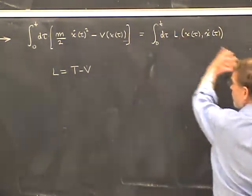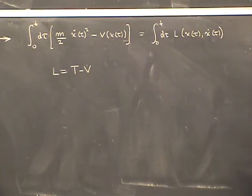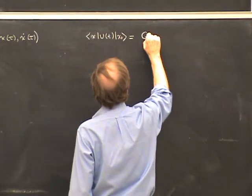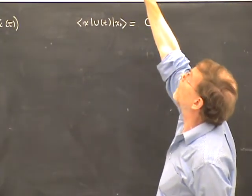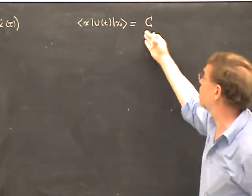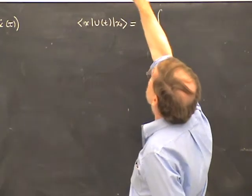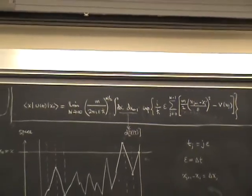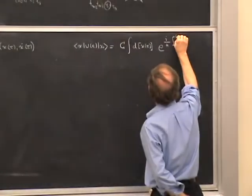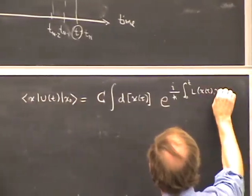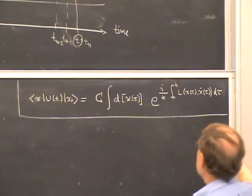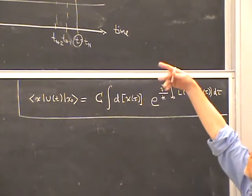Because of these associations, there's a more compact way of writing the path integral. It looks like: ⟨X|U(T)|X₀⟩ equals a normalization constant C — which encapsulates the (M over 2πεℏ)^{N/2} factor — times the integral written as d[x(τ)], representing the volume element of path space, times e to the i over ℏ times the integral from 0 to T of the classical Lagrangian L(x(τ), ẋ(τ)) dτ. This is just notation, but it's a more compact notation than the one above, and it's actually quite interesting to play around with.